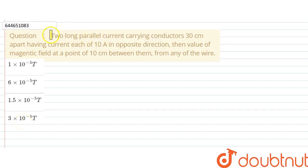The question says two long parallel current carrying conductors 30 centimeter apart having current each of 10 ampere in opposite direction, then value of magnetic field at a point of 10 centimeter between them from any of the wire.